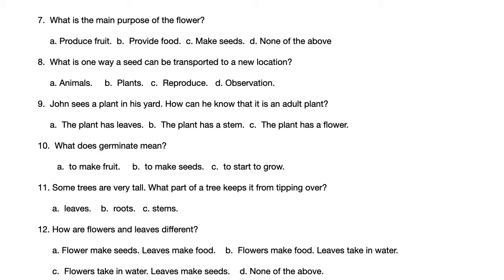Number 7. What is the main purpose of the flower? A. Produce fruit. B. Provide food. C. Make seeds. D. None of the above.